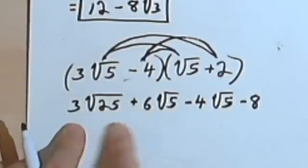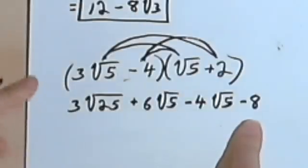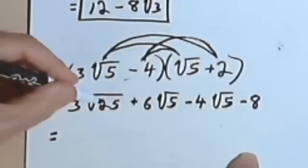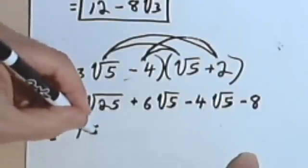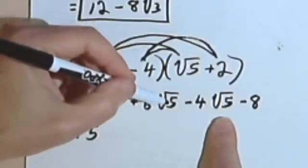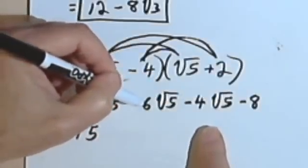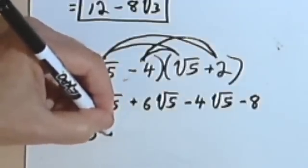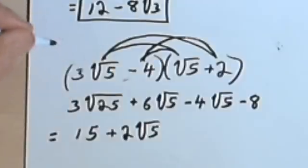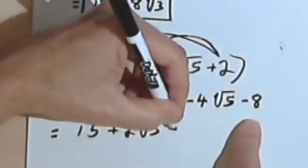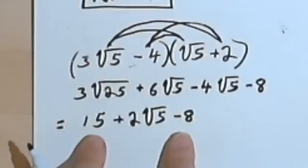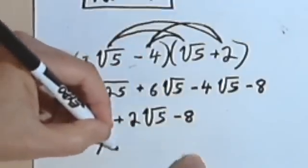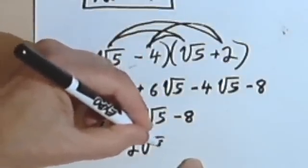Now I want to simplify this down. 25 is a perfect square, so instead of writing the square root of 25 I'll write a 5 — giving me 3 times 5, which is 15. My two middle terms both have a square root of 5, so I can subtract 4 times the square root of 5 from 6 times the square root of 5, giving me 2 times the square root of 5. My final answer is 15 minus 8 is 7, plus 2 times the square root of 5.